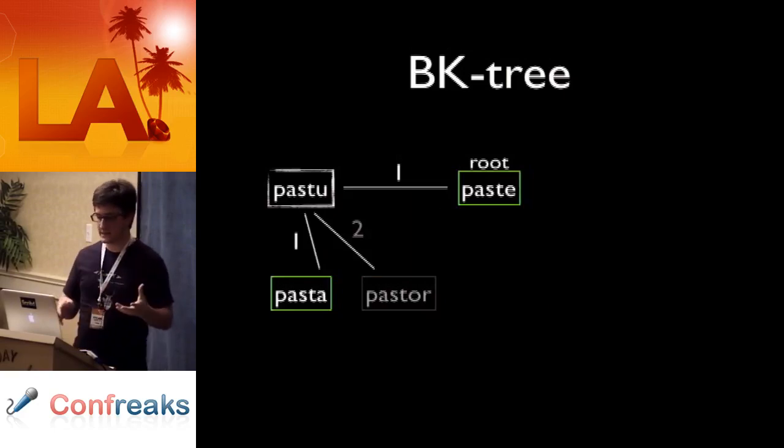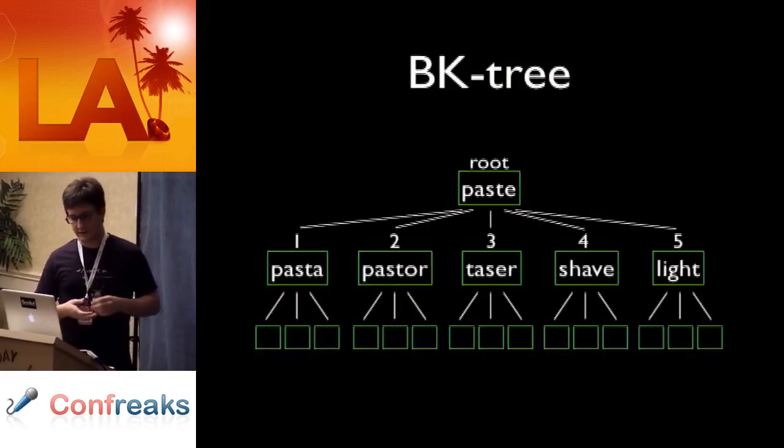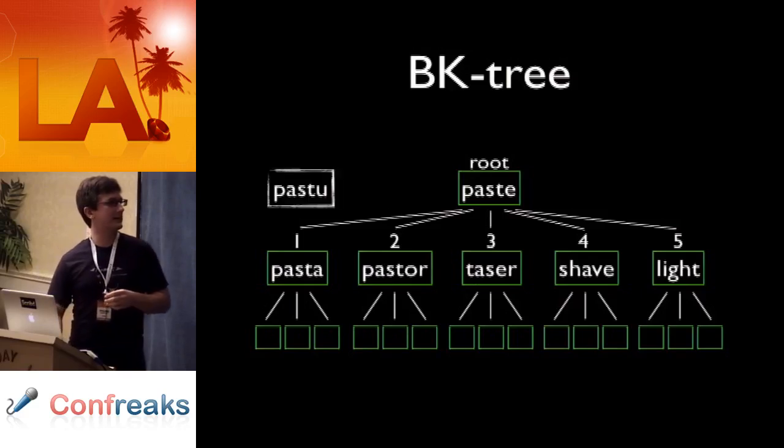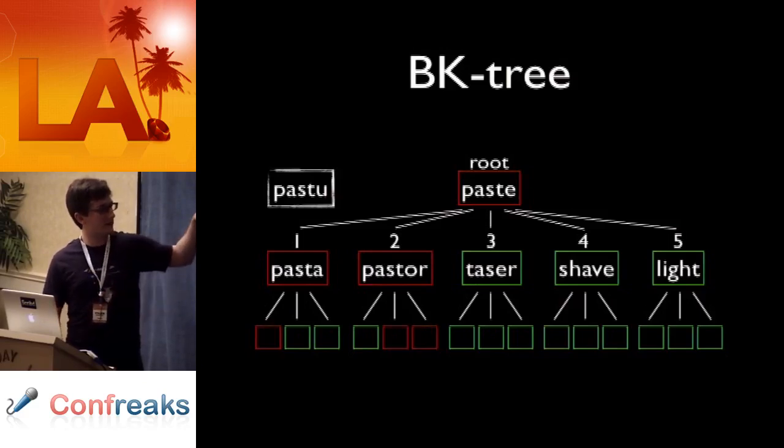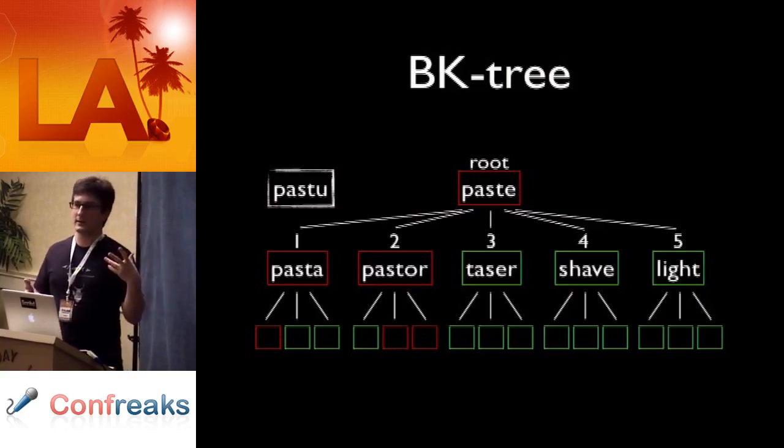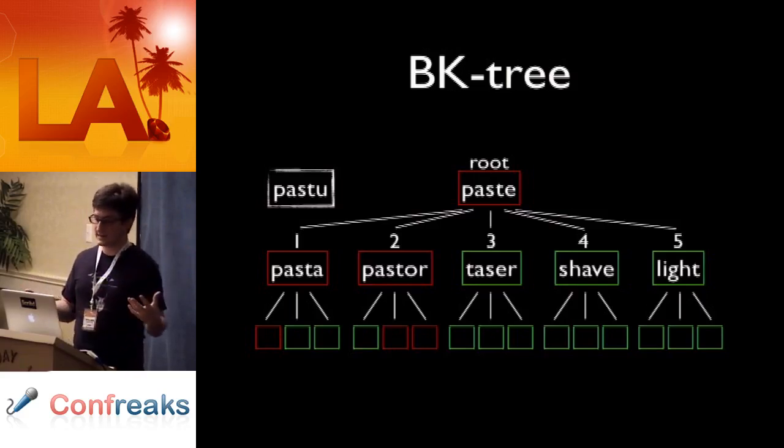Previously, extending the BK tree, maybe we have lots of words here, and you can kind of see, maybe we take that pastu, compare it to paste, and it turns out pasta and pasture, and each of those, continuing down the line, we only end up having to query a very small percentage of the tree, which is fantastic.